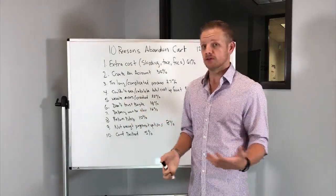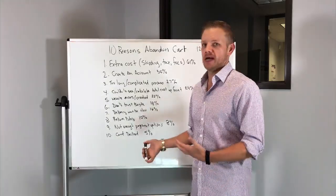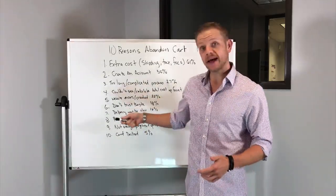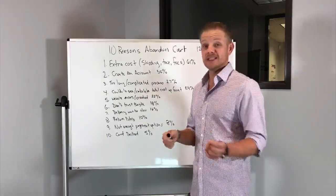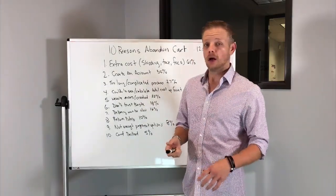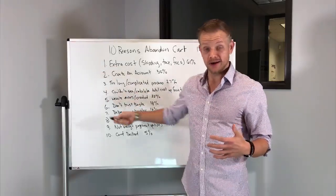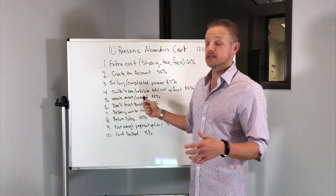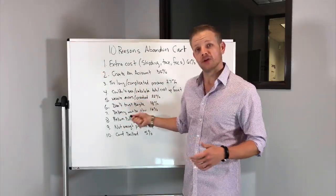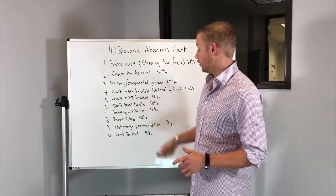It could be 14 to 25 days before somebody actually receives their product. So emphasize fast and discreet shipping. You'll receive your order within five to seven business days. Things like that on your product detail page and your checkout process. The more you can emphasize the delivery windows, the better off you're going to be.